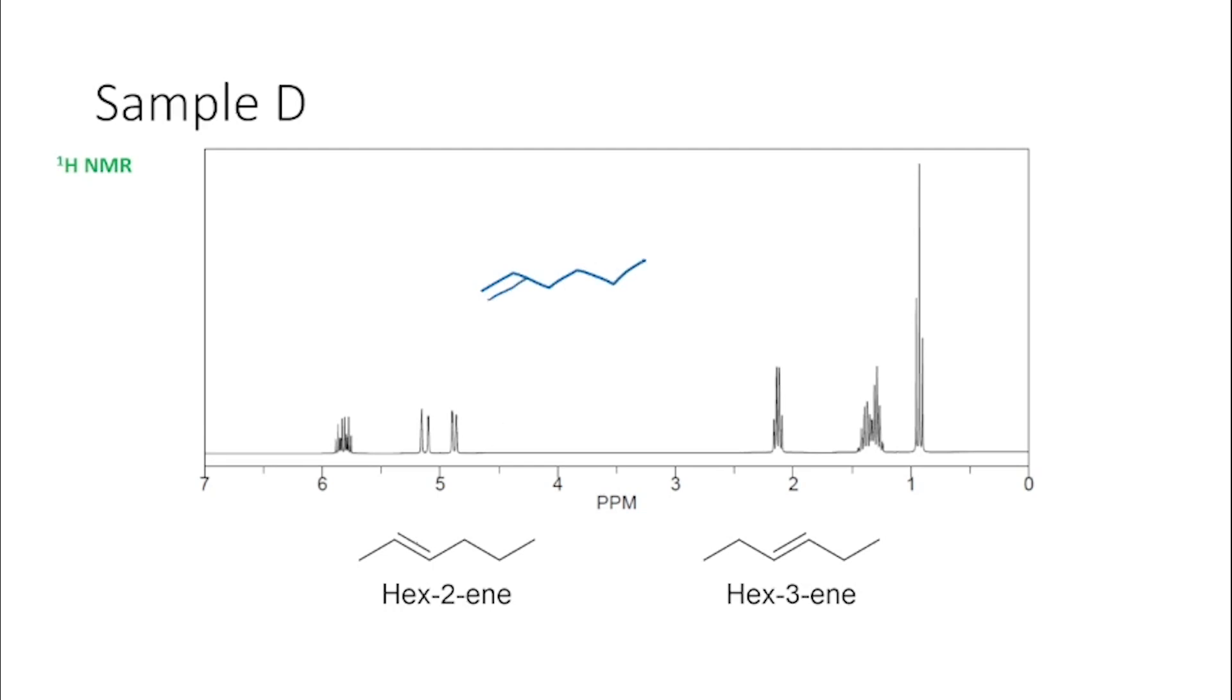So if we think about hex-2-ene, we would only see two alkene protons instead of three in this region down here. So that's the first giveaway. We would also expect to see a CH3 group here with a splitting that should be a doublet. And then we would also expect to see a CH3 group down our upfield as well, but this one would be a triplet.